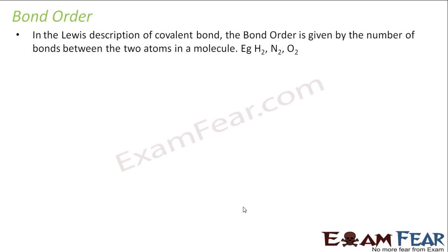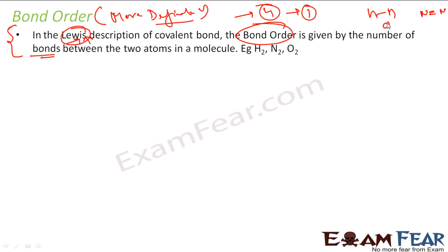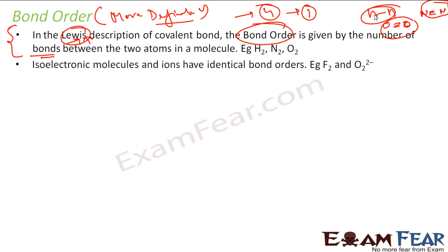Then we have bond order. Bond order has various definitions. In the Lewis description, bond order is simply the number of bonds. For example, H2 has bond order 1, O2 has bond order 2, and N2 has bond order 3 (triple bond). Isoelectronic molecules — those with the same number of electrons — have identical bond orders.